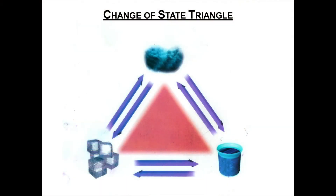Today we're going to look at a way to organize and keep track of the different types of changes of state. We're going to make a change of state triangle. Today you're going to be learning about changes of state, continuing from the lesson we did last week. It will be more of a summary of how to understand how changes of state work, and we're going to make this triangle to help understand them. Let's start by looking at what the different corners of this triangle represent.